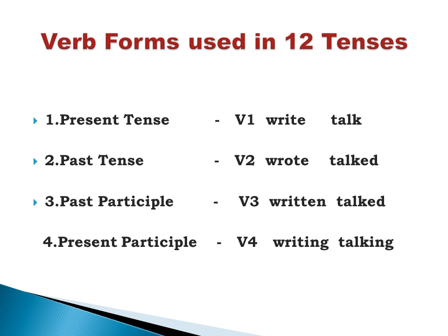We need to understand that verb forms an important element of the sentence. The verb forms which we use in these 12 tenses are present tense, past tense, past participle, and present participle. To make it simple, we have coded them as V1, V2, V3, V4.